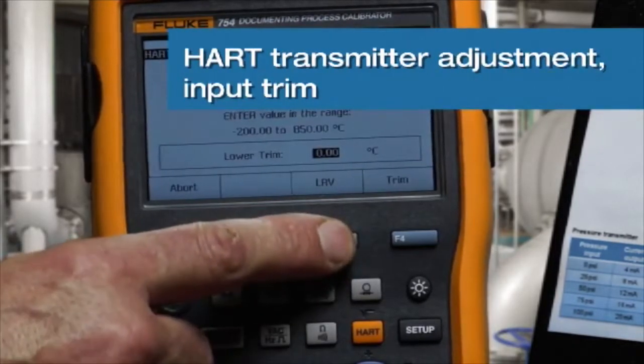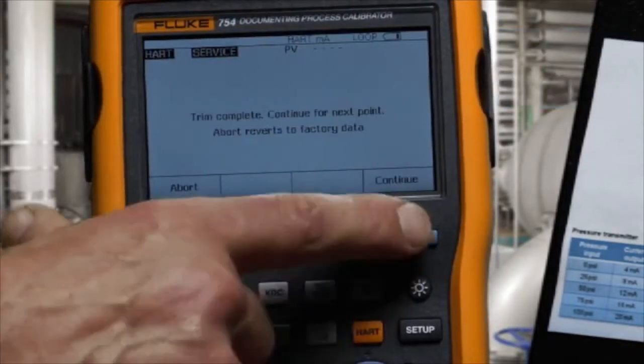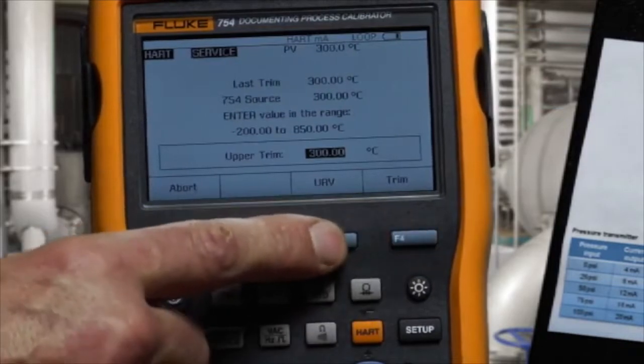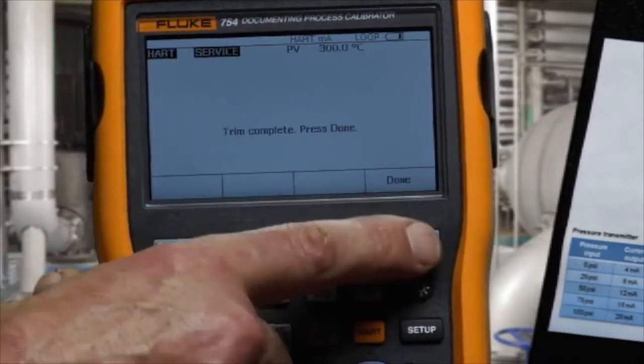We're going to trim the lower range value first. Then we're going to trim the upper range value. Adjustment is completed.